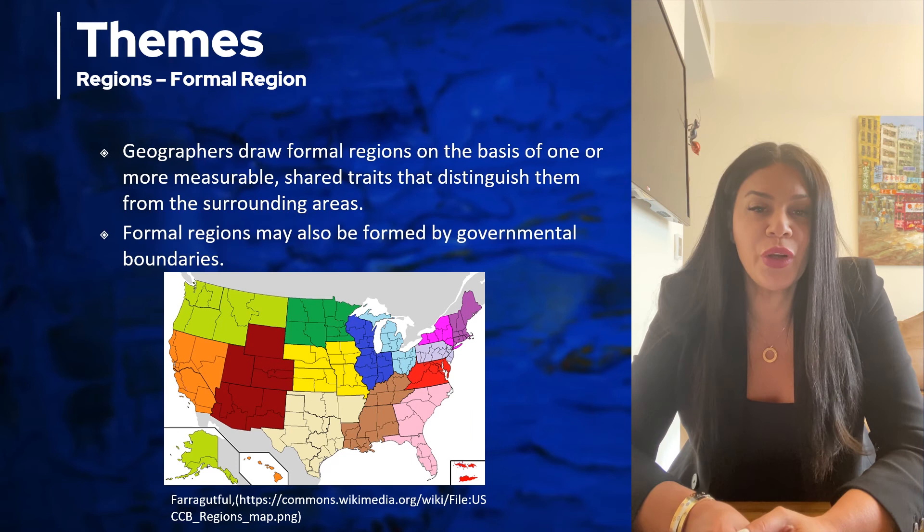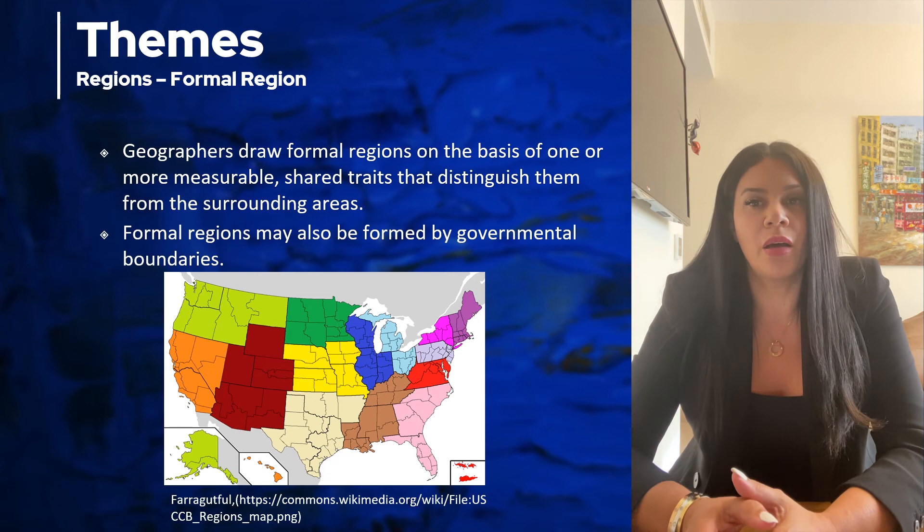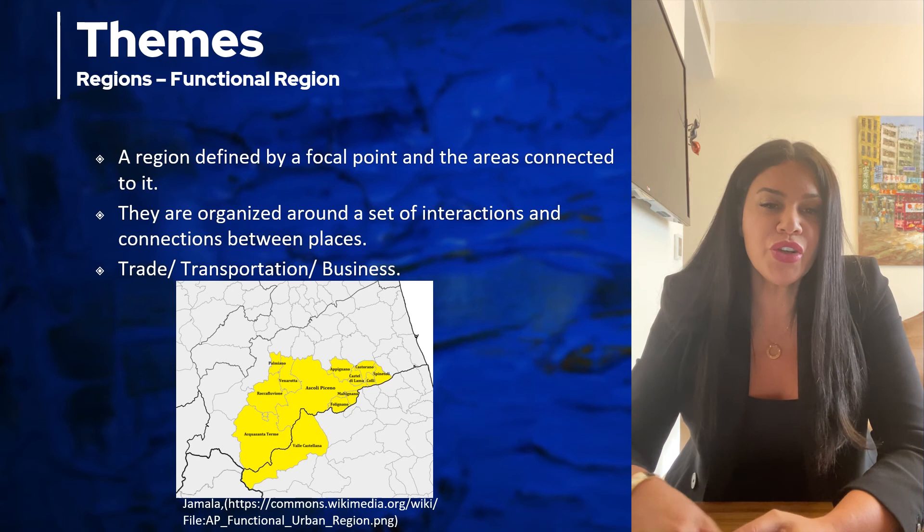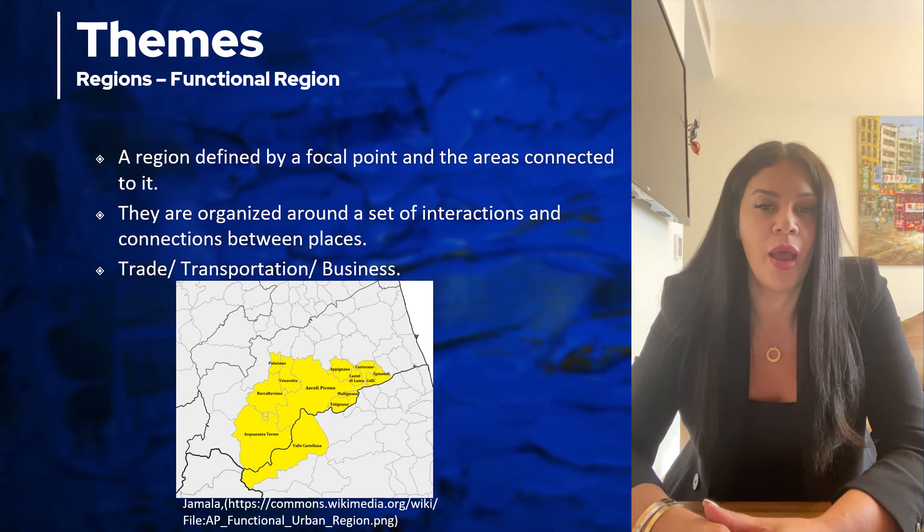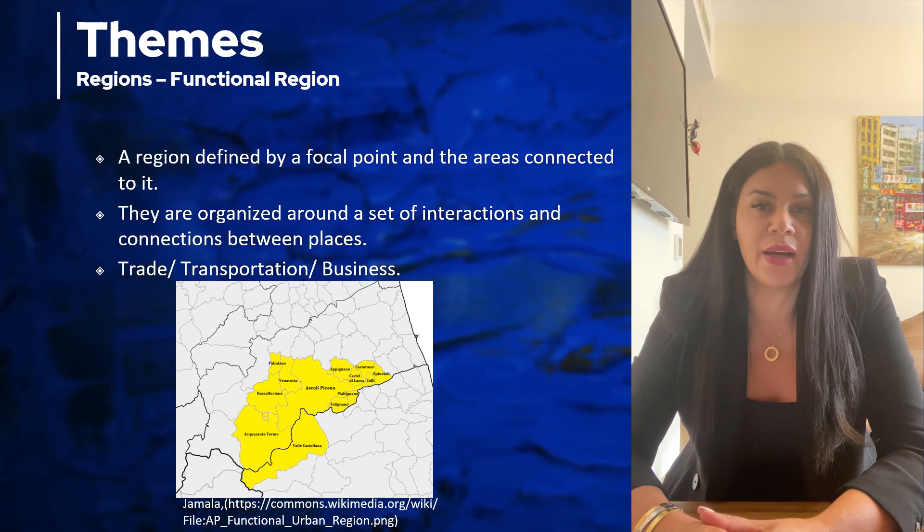The formal region has an official boundary that has been drawn — so a country, a state, or a formal region. A functional region is when the region is defined by a focal point and the areas are connected to it, so when an area is related to a central hub or a focal point.